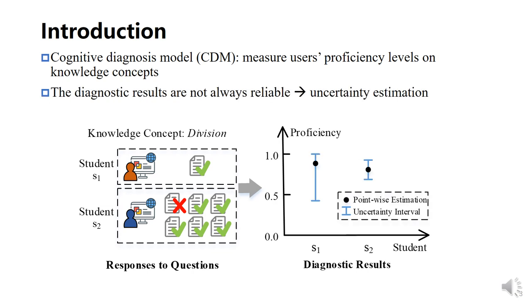As the measurement is not always reliable due to the weak links of the models and data, the uncertainty of measurement also offers important information for decisions.